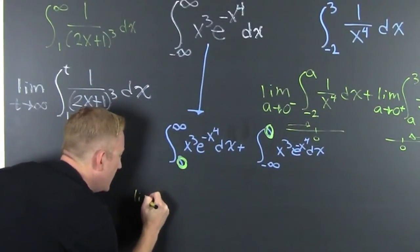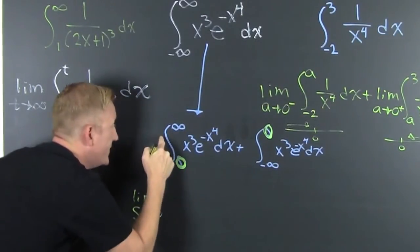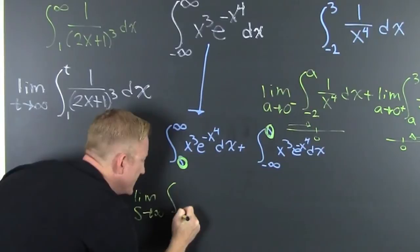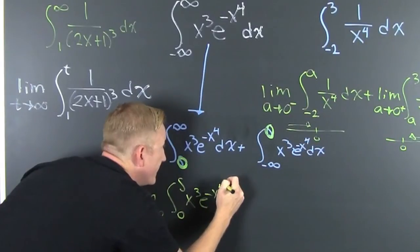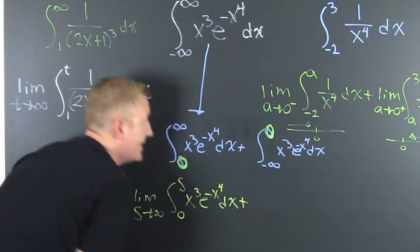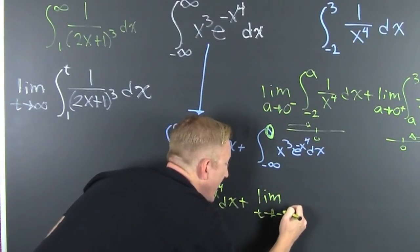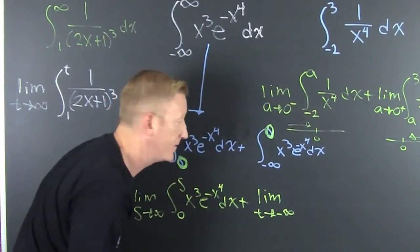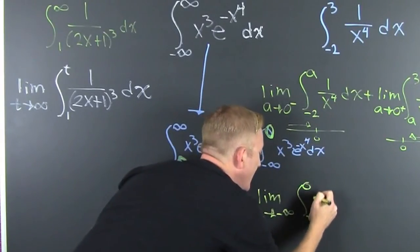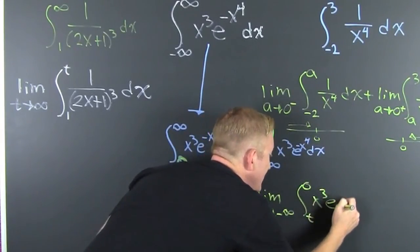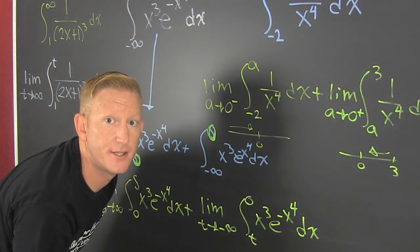The limit as s goes to infinity of this guy, zero to s, x to the three e to the minus x to the four dx. And then we're going to add that to the limit as t goes to minus infinity. Can it do that? Yeah. So then this is going to be t down here, zero up there, x to the third e to the minus x to the fourth dx. Now those are the three cases.